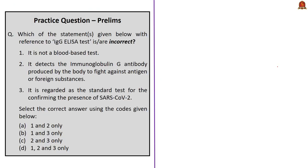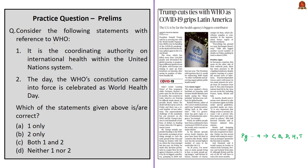Looking at the practice question — you need to choose the incorrect statements. Statement 1 says IgG ELISA test is not a blood-based test — this statement is incorrect, because it is indeed a blood-based test. Statement 2 says this test detects the Immunoglobulin G antibody produced by the body to fight against antigens — this statement is correct. Since statement 2 is correct, you can arrive at the answer: option B — 1 and 3 only — meaning statement 3 is also incorrect. The IgG ELISA test is not regarded as the standard test for confirming SARS-CoV-2; that is the RT-PCR test.